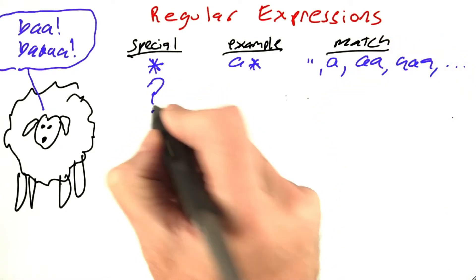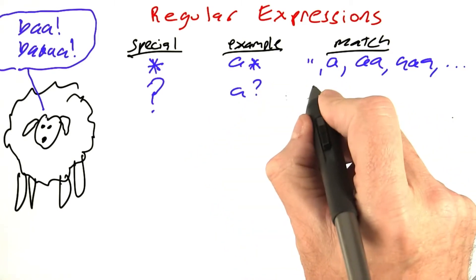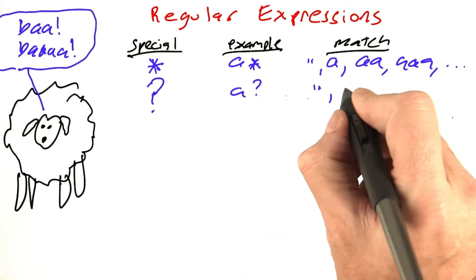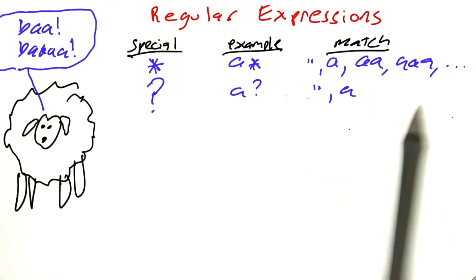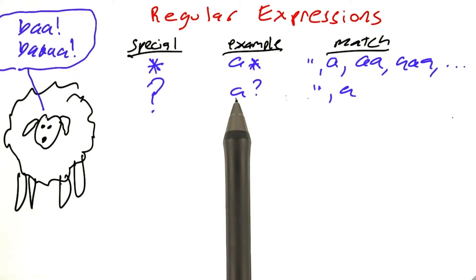Another special character is the question mark. So a question mark matches either the empty string or the single string a and nothing else. So it means an optional occurrence of whatever comes before. In this case, an a. It could be a b, a c, whatever.